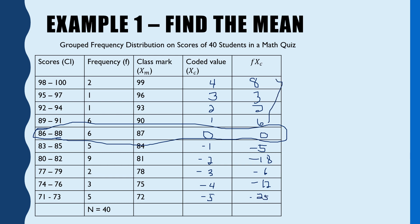Now add all the positive values: 8 plus 3 is 11, plus 2 is 13, plus 6 is 19. So the positive total is 19. For the negatives: 25 plus 12 is 37, plus 6 is 43. So negative 43. Then subtracting: negative 66 minus positive 19 gives us negative 47. So the sum of fXc is negative 47.